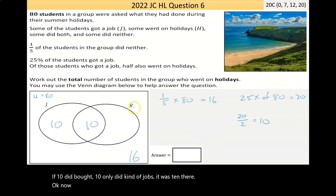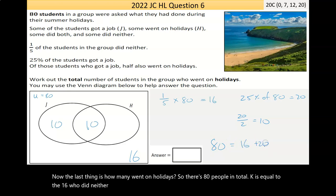Now the last thing is how many went on holidays. So there's 80 people in total is equal to the 16 who did neither, plus the 20 who got a job or went on holiday, plus I don't know.